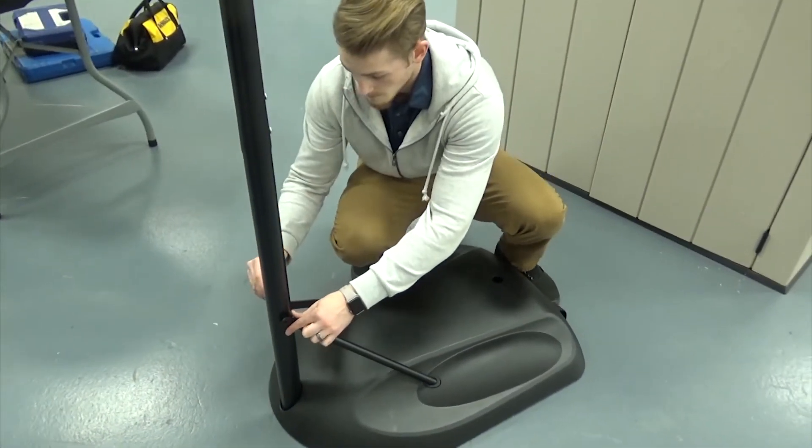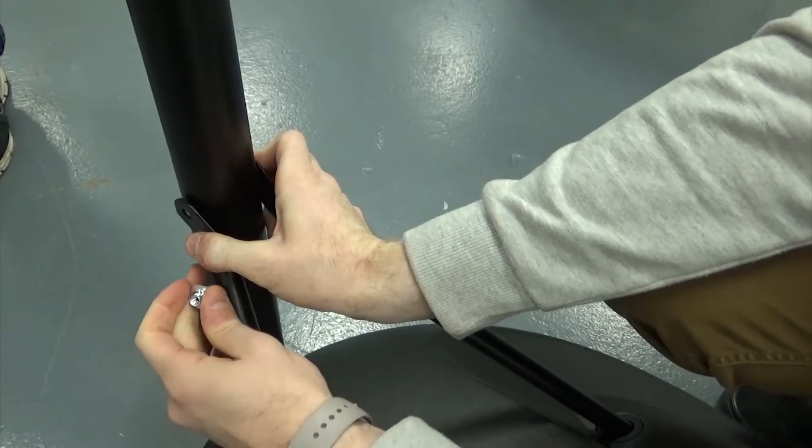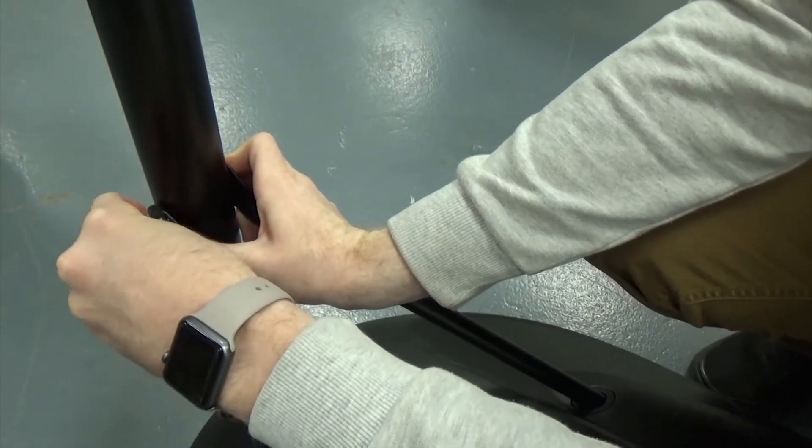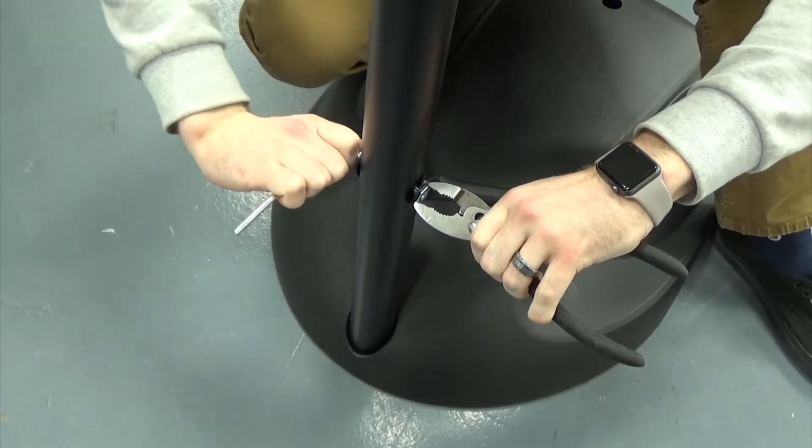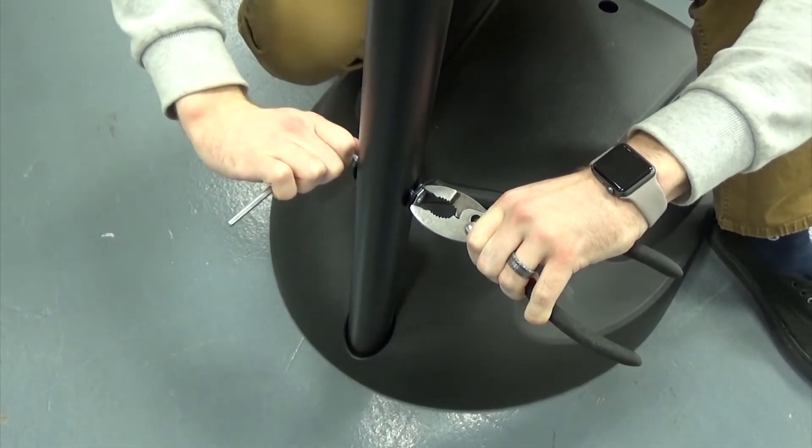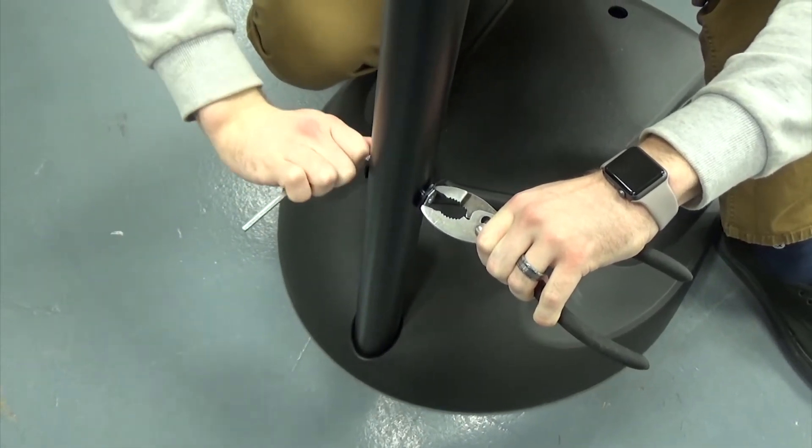Attach the pole to the braces using a pair of pliers or a crescent wrench to hold the T-nut in place. Please note, the bolt will not pass through the entire width of the pole. The T-nut is designed to fasten to the bolt inside the pole.